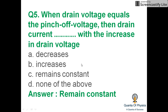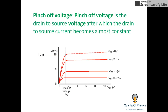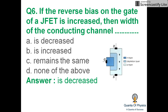The IDSS drain current is constant. If the reverse bias on the gate of a JFET is increased, then the width of the conducting channel is decreased. As the reverse bias of the gate is increased, this width decreases because in reverse bias, the depletion width of the gate increases, and hence the width of the conducting channel decreases.